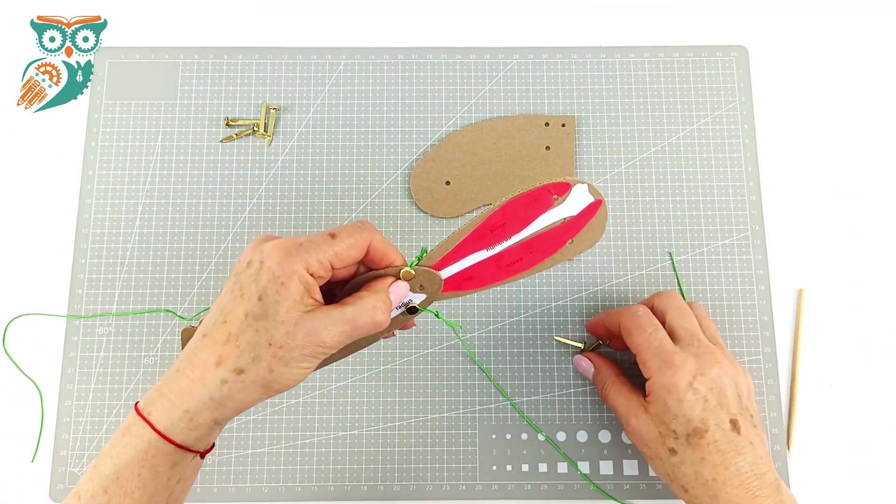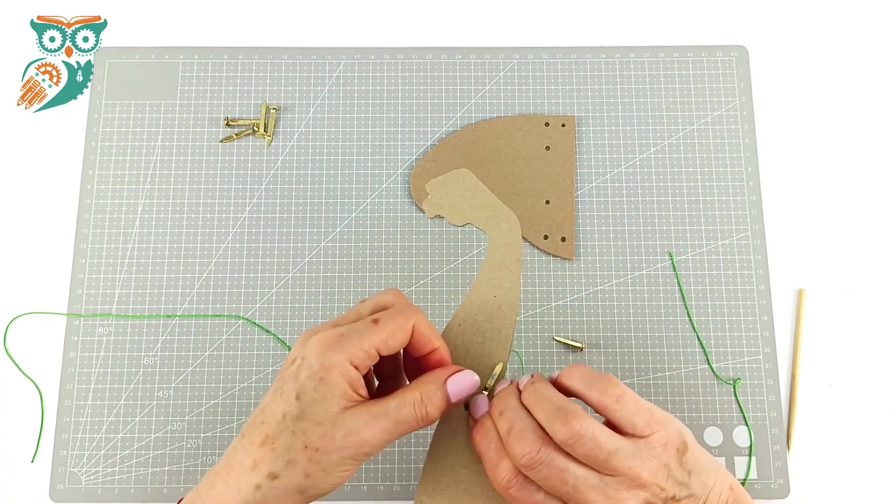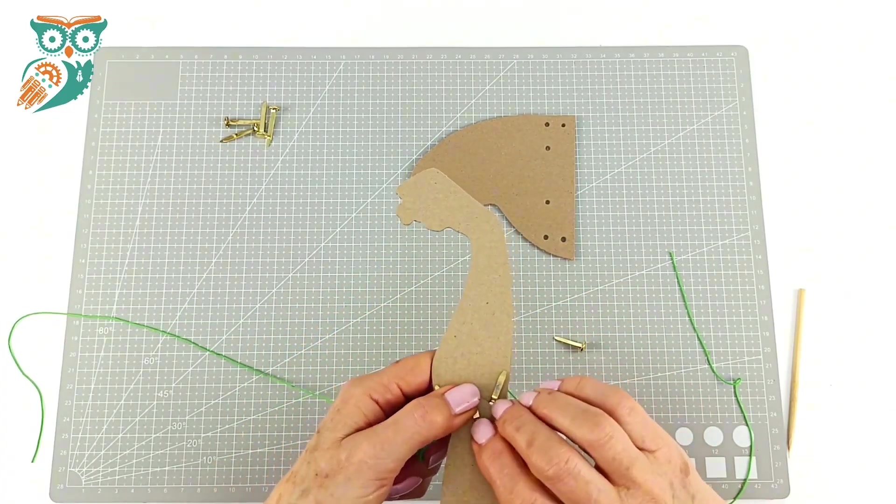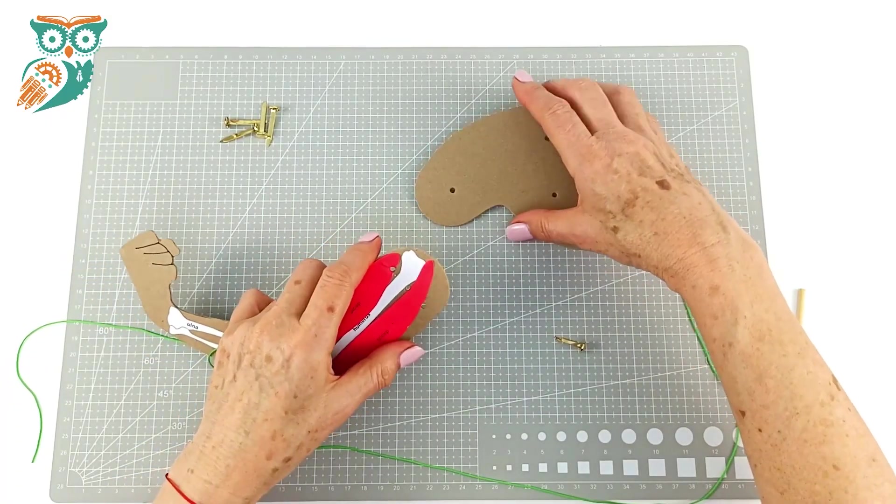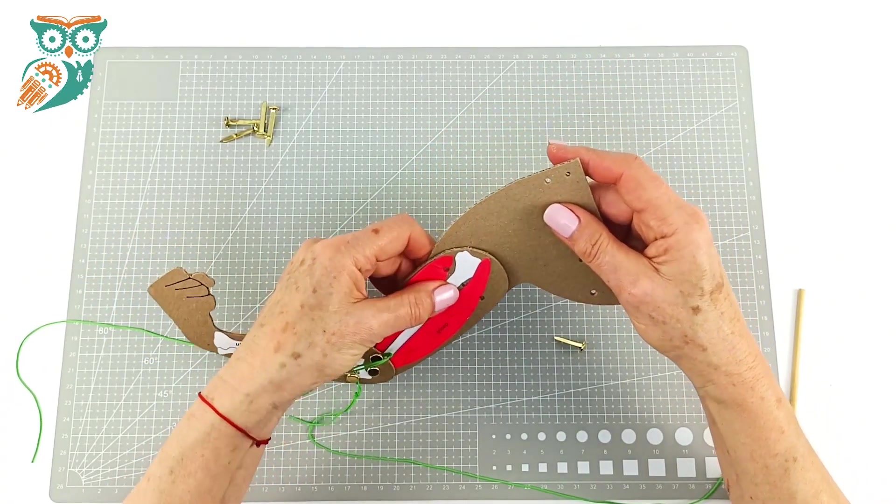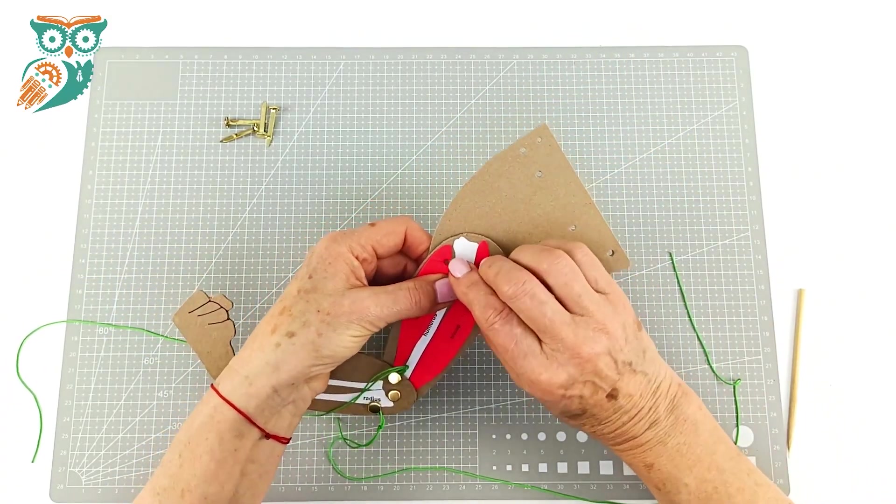Now we're going to take the upper part of the arm and we're going to put another one of the shorter paper fasteners in where the elbow goes. You want to test it and make sure that you can move that joint because just like our elbow we want it to move.